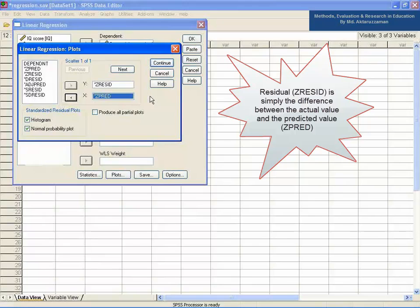Residual ZRESID is simply the difference between the actual value and the predicted value ZPRED. Click Continue and then press OK.